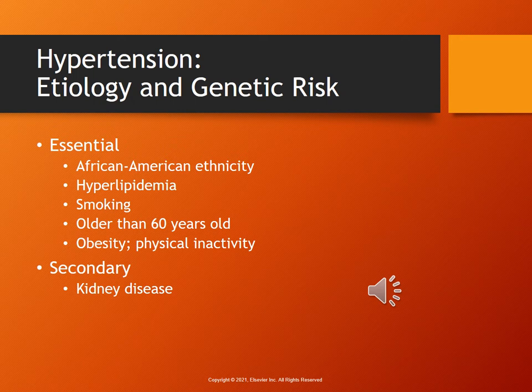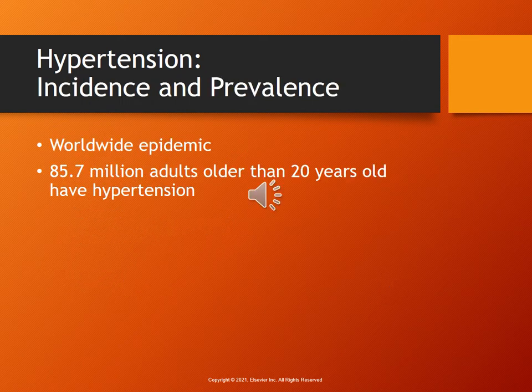The etiology and genetic risk of hypertension: African Americans are more likely to have hypertension than others. If somebody has hyperlipidemia, they're older than 60, and they smoke, there's a good chance they will have high blood pressure. Obesity and physical inactivity are also risk factors. Secondary risk factors would include kidney disease. You can look at table 33.2 on page 700. Hypertension affects men and women — it is a worldwide epidemic. Most people older than 20 have some form of hypertension. Table 33.1 on page 700 goes over Stage 1 and Stage 2 and how the different measurements are categorized.